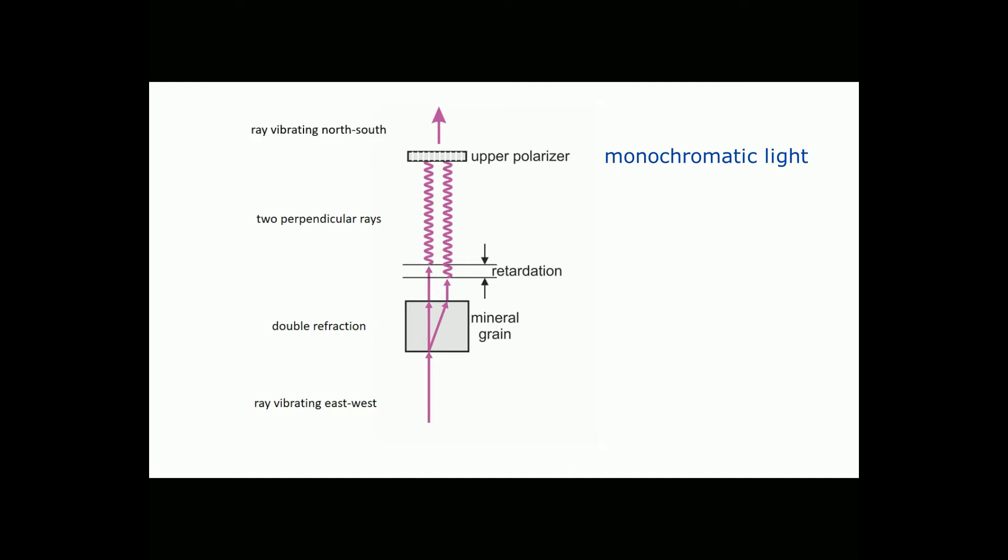If they are in phase, they can add constructively and we see light. And if they are out of phase, they can add destructively and we will see less light or no light at all. The amount of light we see will change during stage rotation because the intensities of the two rays change. The grain will go extinct every 90 degrees and it will have maximum brightness halfway between extinction angles.